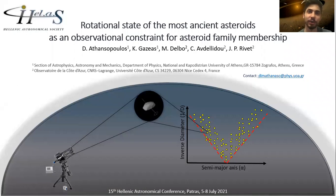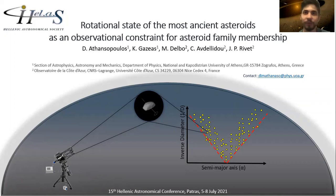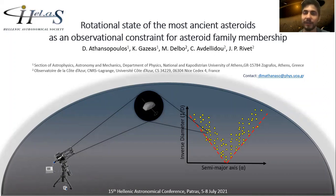My name is Dimitros Athanasopoulos and I am a PhD candidate at the National University of Athens in the Department of Physics. My work focuses on the most ancient asteroid families of our solar system that have been discovered. I perform photometric observations to reveal the rotational state of the members in order to characterize these families.